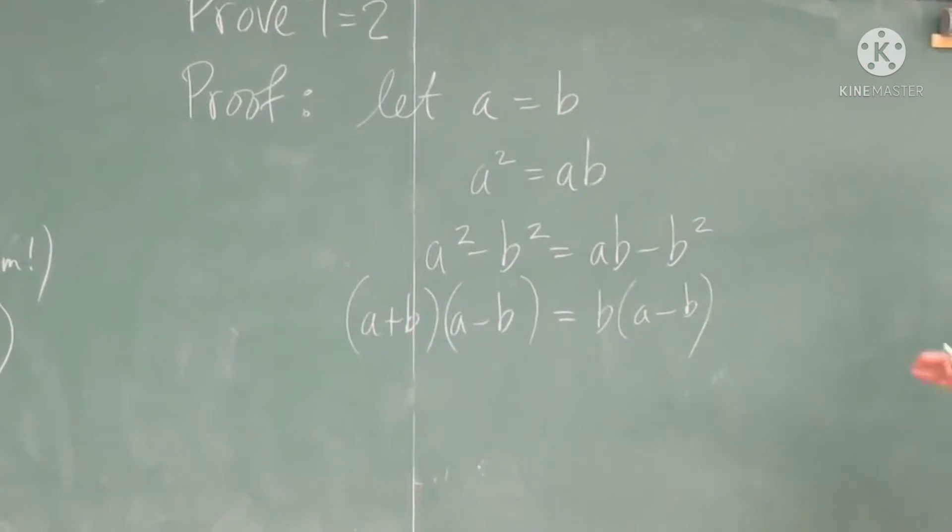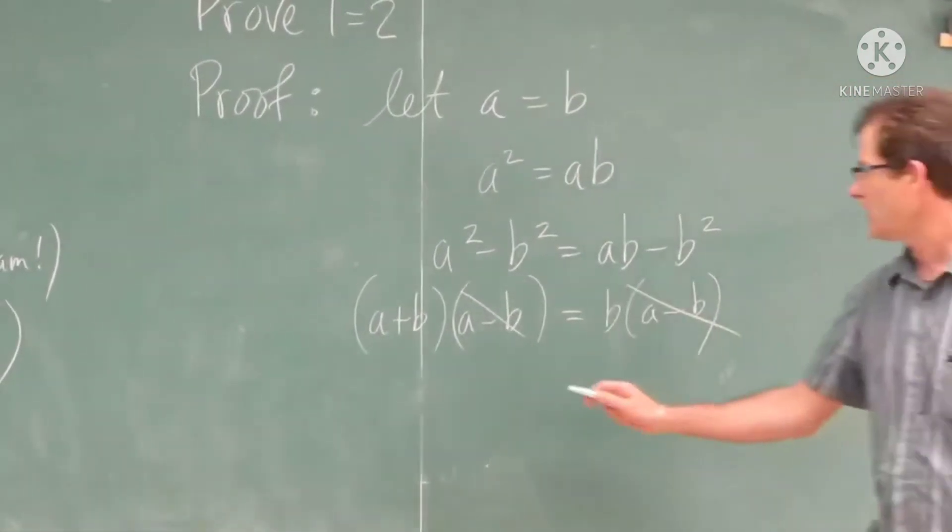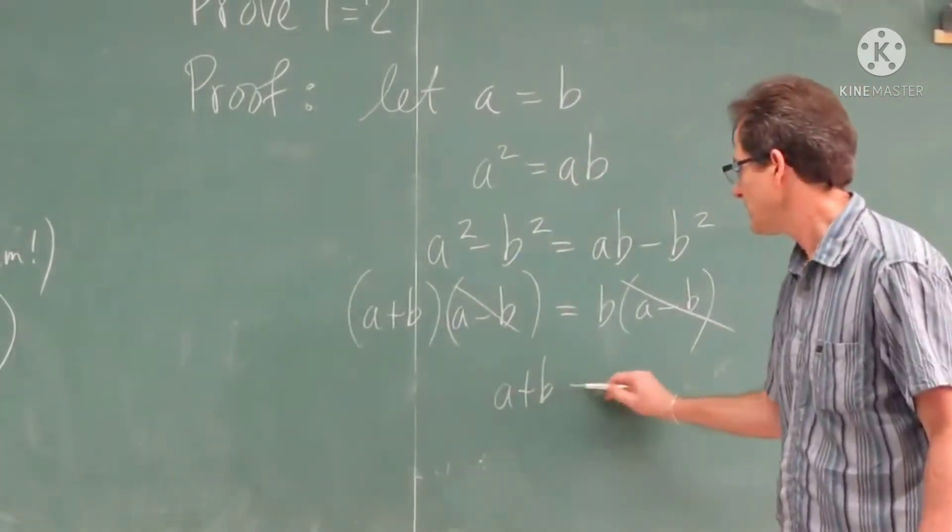We're drawing down before you say anything. At this point, I can divide both sides by A minus B. I can just cancel A minus B. So I get A plus B equals B.